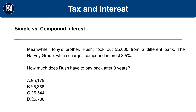Moving on to the second question. Tony's brother Rush took out £5,000 from a different bank, the Harvey Group, which charges compound interest of 3.5%. Here they've spelled out the fact that it's compound interest. Notice that if in the previous question you had used compound interest, you'd want to go back and recalculate, because this question is clearly about compound interest and strongly hints that the previous one was about simple interest. The question asks: how much does Rush have to pay back after three years?